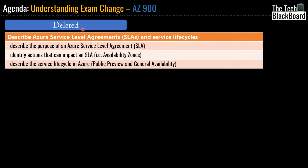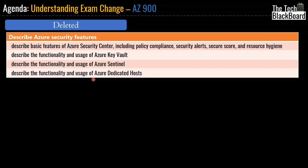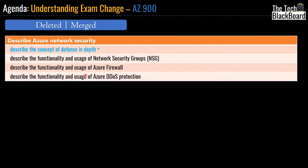The third section also removed from AZ-900 is Describe Azure Service Level Agreements and Service Life Cycles — all subsections will be removed. Another major section being removed is Describe Azure Security Features — all its subheadings will be removed from 5th of May. Finally, Describe Azure Network Security, along with all its subheadings, will also be removed from AZ-900.